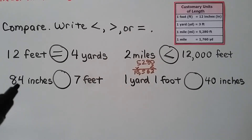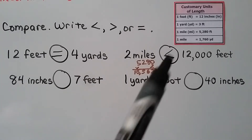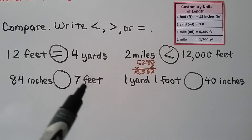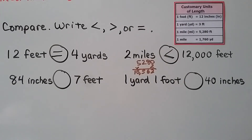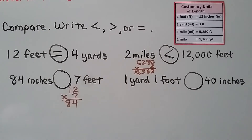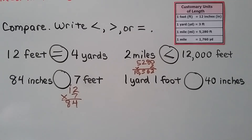What about 84 inches and 7 feet? There are 12 inches in 1 foot. We do 7 times 12 to find how many inches that would be. 7 feet equals 84 inches because 12 times 7 is 84.